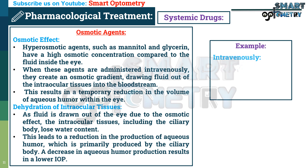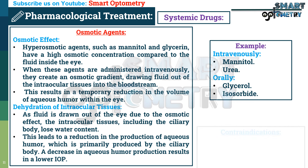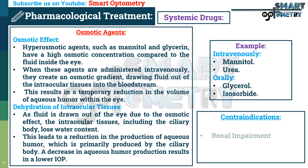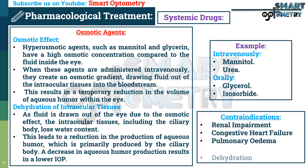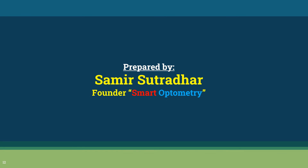Examples of osmotic agents include mannitol and urea given intravenously, and glycerol and isosorbide given orally. Contraindications of osmotic agents include renal impairment, congestive heart failure, pulmonary edema, dehydration, and electrolyte imbalance. In the next video I will discuss surgical management of glaucoma. Stay with Smart Optometry and study optometry smartly.